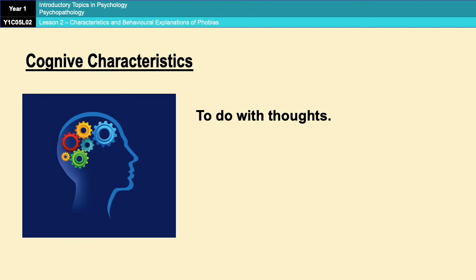The final type is cognitive characteristics, which are to do with thoughts and interpretations of events. One is selective attention to the stimulus. For example, if you're afraid of spiders and one runs across the floor, your attention will be entirely on that spider. Everything else going on in the room, no matter how important, will drift into the background. The only thing you'll want to do is keep that spider within eyesight so you know where it is at all times.